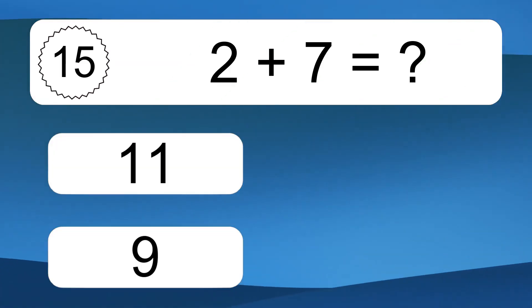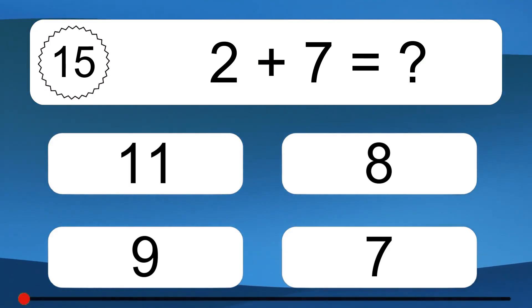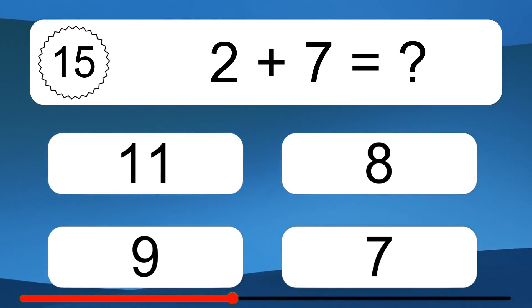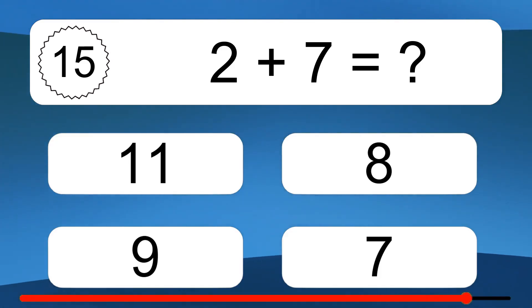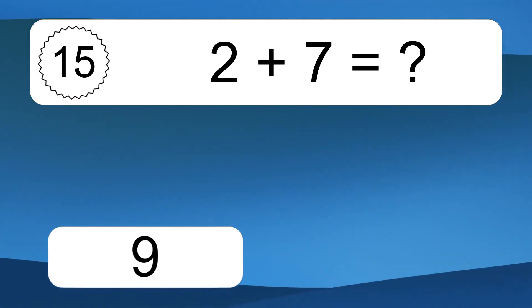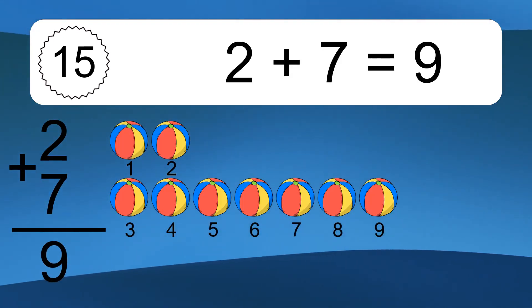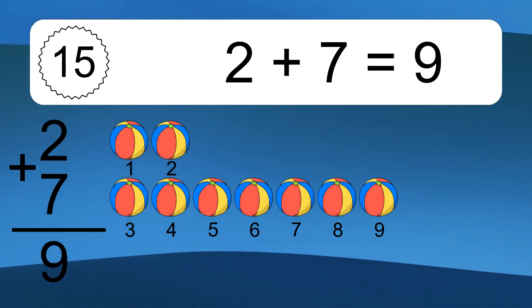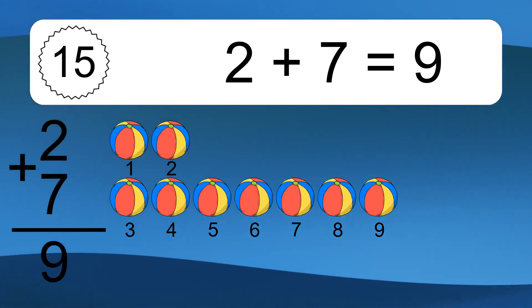2 plus 7 equals what? 2 plus 7 equals 9. Let's count it: 1, 2, 3, 4, 5, 6, 7, 8, 9.